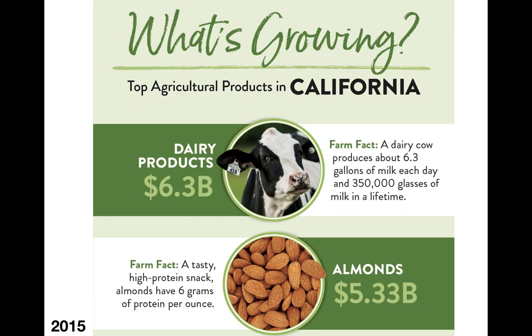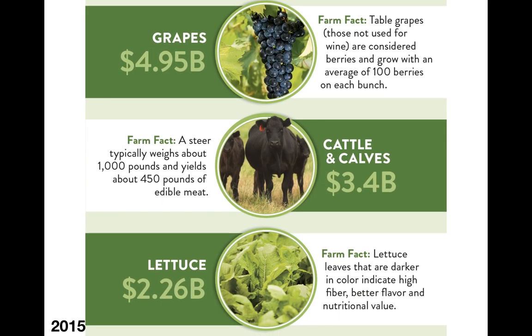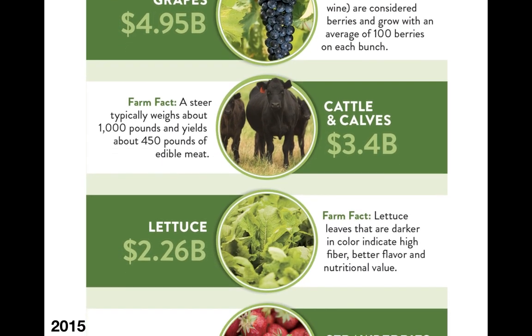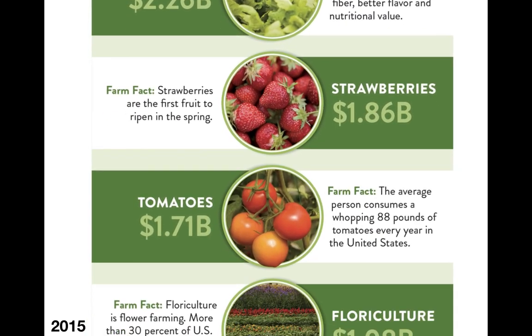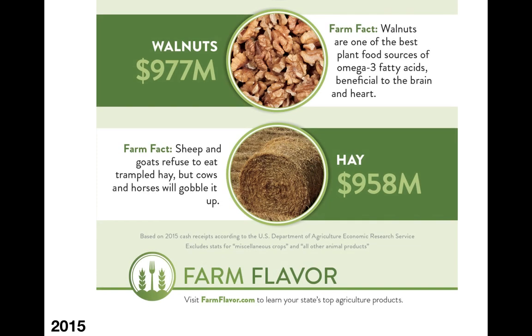Looking at California agriculture, we can see that we are a large producer of dairy, almonds, grapes, cattle and calves, lettuce, strawberries, tomatoes, flowers, walnuts, and hay, among other things. What don't we grow in California?